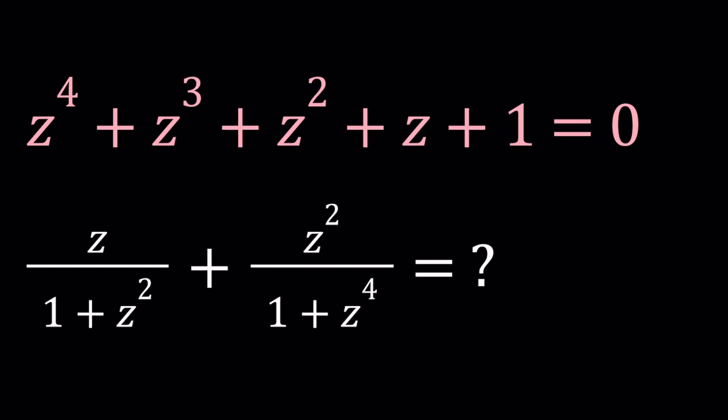So we're given that z to the fourth plus z to the third plus z squared plus z plus one equals zero, and we're supposed to evaluate the given expression, z divided by one plus z squared plus z squared divided by one plus z to the fourth power. I'll be introducing a couple different approaches here.